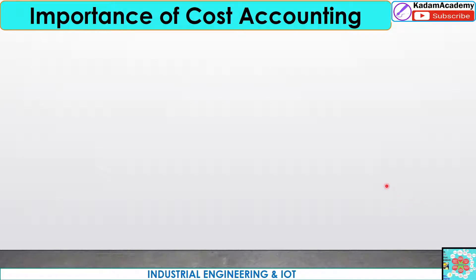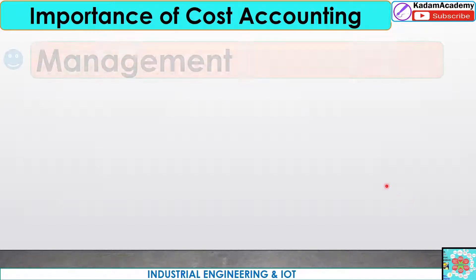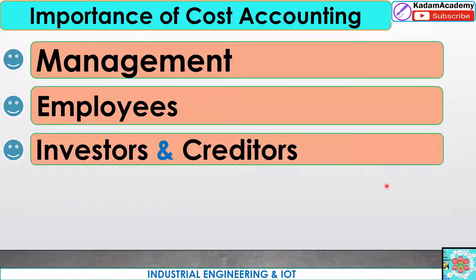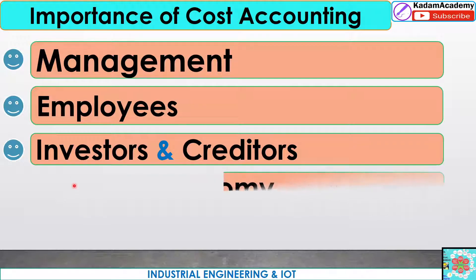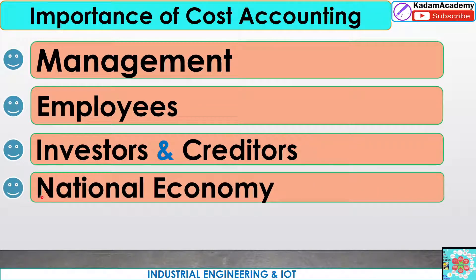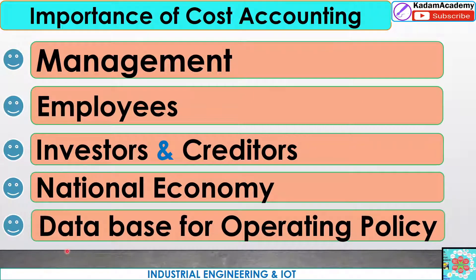Now we will see the importance in relation to management, employees, investors and creditors in industry — who invest shares — and financial institutes investing through FDIs (foreign direct investment). These points are also very important for the national economy. The last one is the database for operating policy, which will be useful for operating policy decisions. These are the key areas of importance for cost accounting.